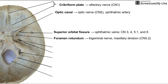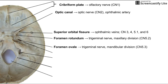Next is the foramen rotundum, which houses the maxillary division of the trigeminal nerve — that's the second portion of cranial nerve 5. Next is the foramen ovale, which houses the mandibular division of the trigeminal nerve, the third portion of cranial nerve 5. So the three parts of cranial nerve 5 go through the superior orbital fissure, the foramen rotundum, and the foramen ovale.